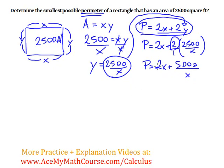Well, we need to minimize this, the perimeter. So I'm going to take the derivative and make it equal to 0 and solve for x. So the derivative of 2x is just 2. Now what is the derivative of 5,000 over x? Well,